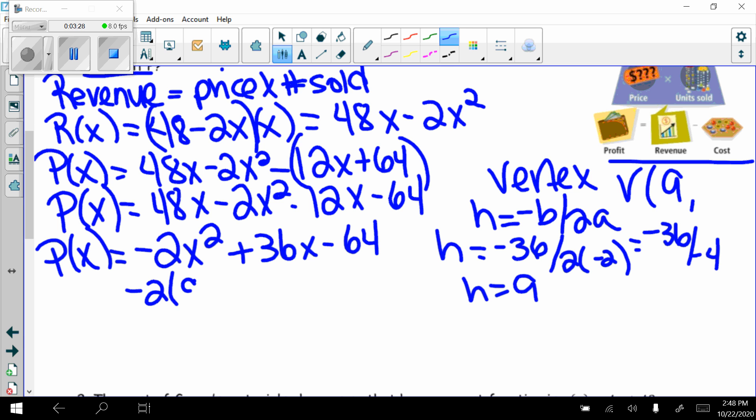I can plug that into this equation to find my y value. Negative 2 times 9² plus 36 times 9 minus 64. 9² is 81. 81 times negative 2 gets me negative 162. 36 times 9 gets me 324 minus 64. Add all that up, and I get 98. So my vertex is (9, 98).